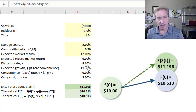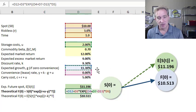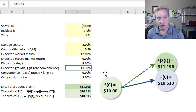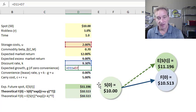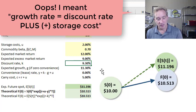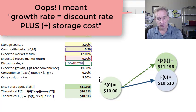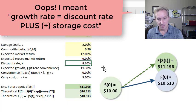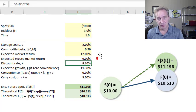And in this case, my expected growth rate, you can see here, is the discount rate minus the storage cost. My discount rate is based on the capital asset pricing model. In this case, it happens to be my risk-free rate of 3%.